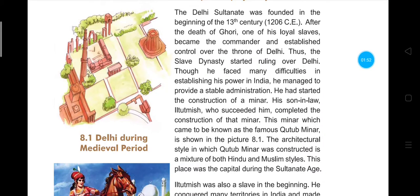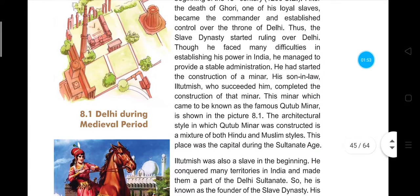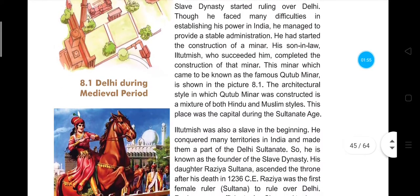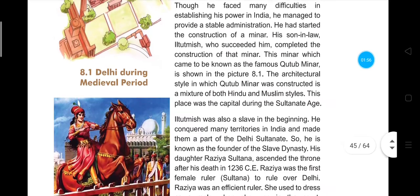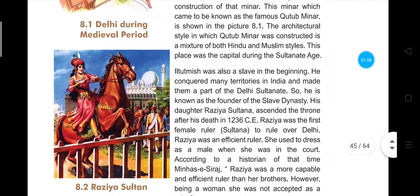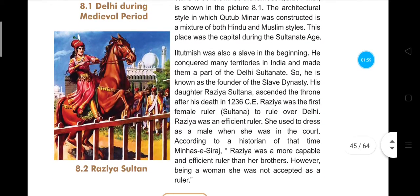Iltutmish was Kutubdin Ebak's successor and son-in-law. He was also a slave in the beginning and he conquered many territories in India, making them part of the Delhi Sultanate.